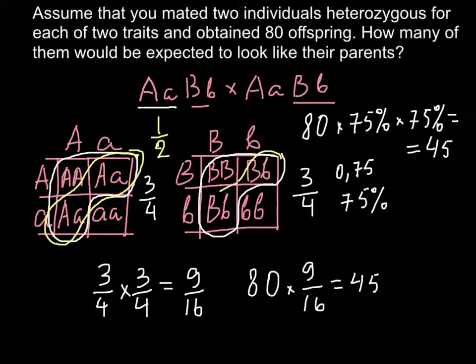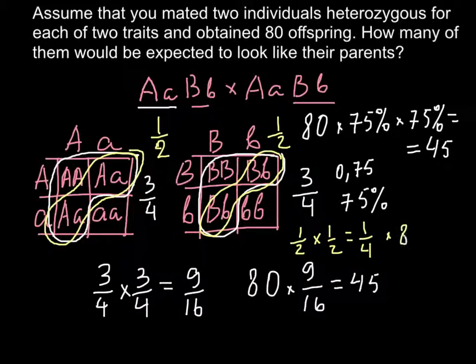And here also would be 1 half. So we multiply 1 half by 1 half and this is going to be 1 over 4, and then we multiply by 80, total number of plants, and the answer would be 20.